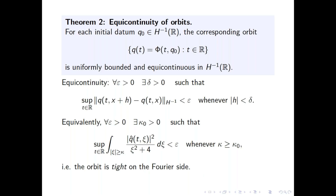The second theorem states that if you take an initial data in H^{-1}, then the corresponding orbit — the orbit of the solution — is uniformly bounded and equicontinuous in H^{-1}. This might sound academic, but it turns out to be an essential ingredient in the proof of the first theorem.